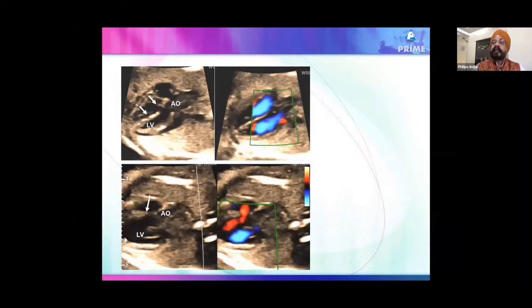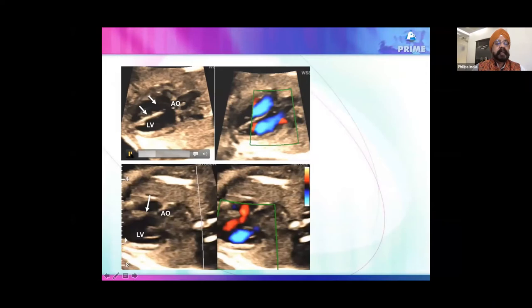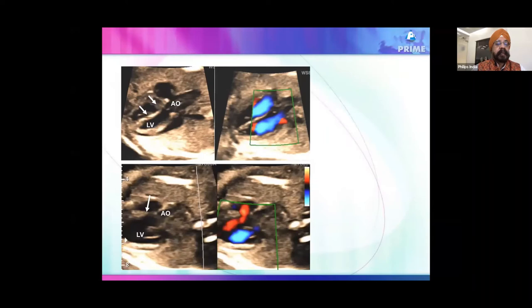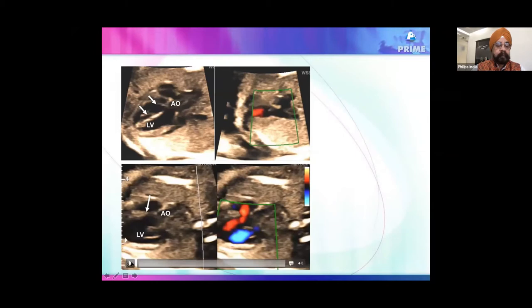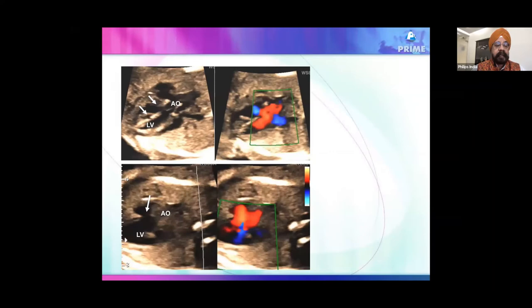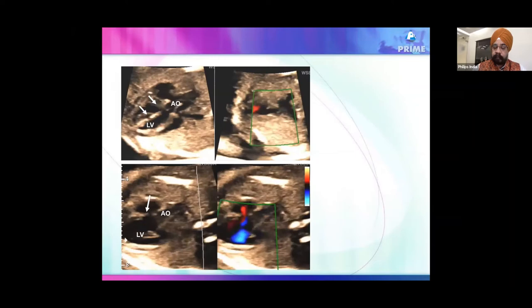Here is a case where on 2D it looked like there were two VSDs in the muscular portion, depicted by arrows, but when color was applied, there was no flow across them — they were pure dropouts. In contrast, in another patient, there was a large VSD with clearly visible flow across the area.